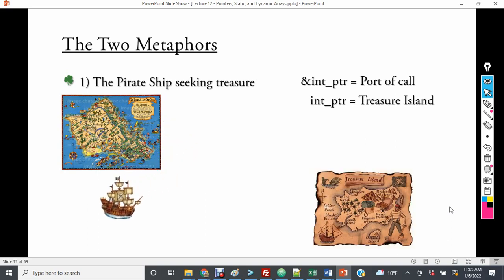So then we have a treasure island, which is our destination. And the pirate ship itself uses navigation to get to that treasure island. The int pointer indicates where the island is. So you can think of the actual pointer itself as the map.